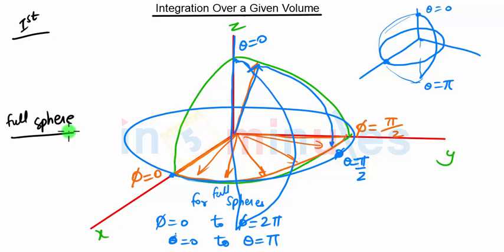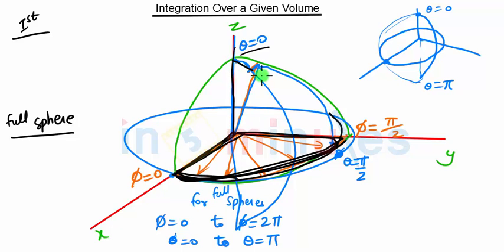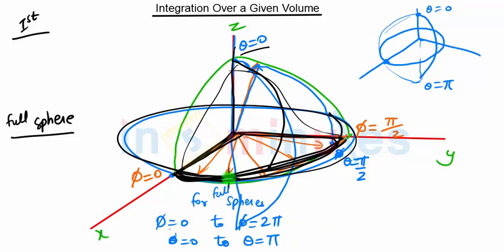To summarize: φ is measured with respect to the X axis and θ is measured with respect to the Z axis. To cover the first octant, we move θ from 0 to π/2 and φ from 0 to π/2. For the full sphere, φ goes from 0 to 2π and θ from 0 to π. These are the limits you need to remember, and they will be clearer when we see problems of this type.